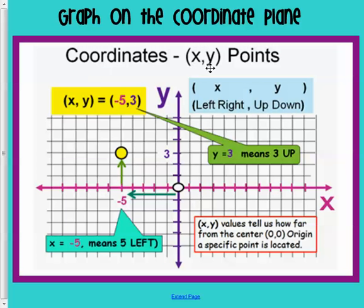Coordinates are x and y points. So if we were given a point like this one, negative 5 comma 3, the x is the negative 5, and the y is the 3.